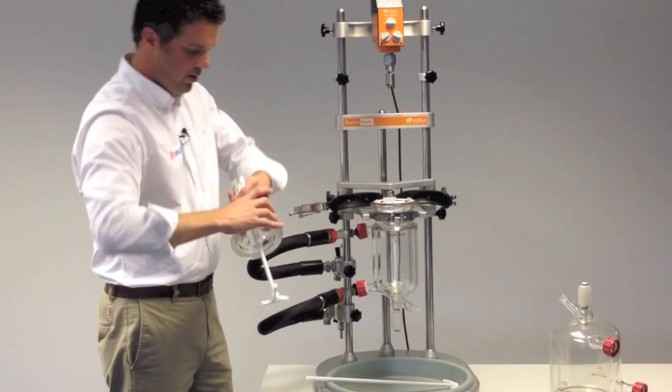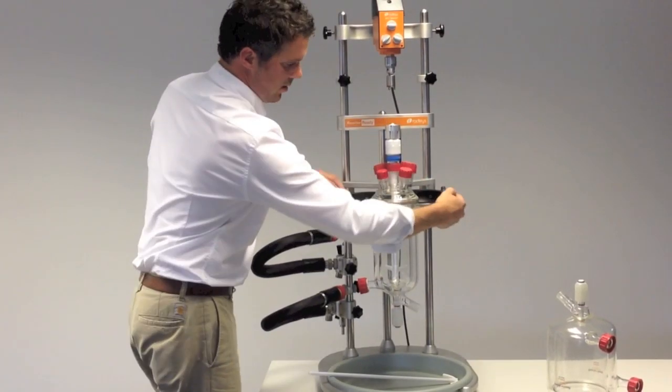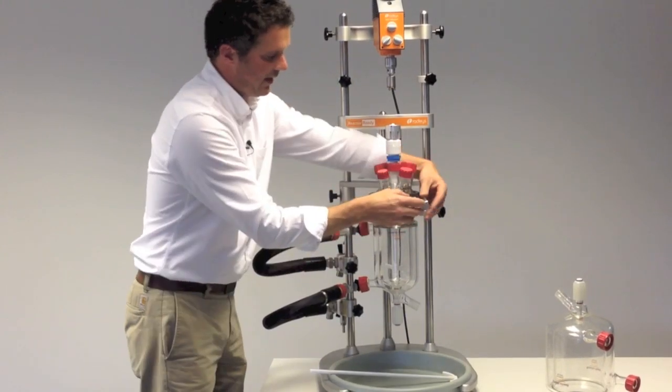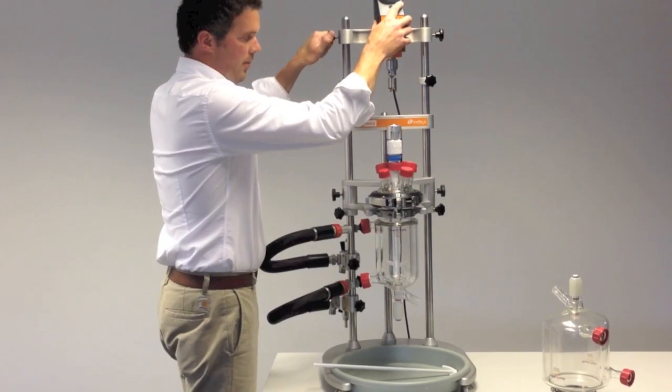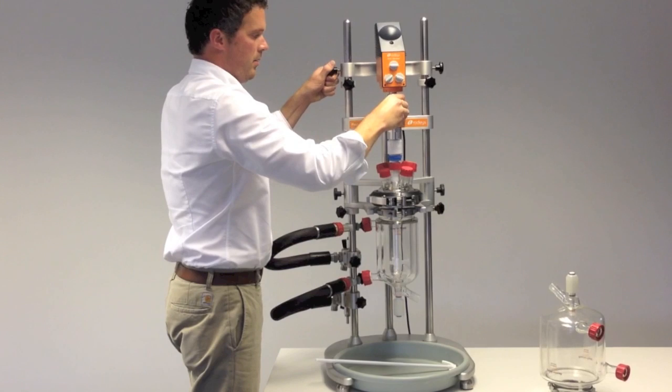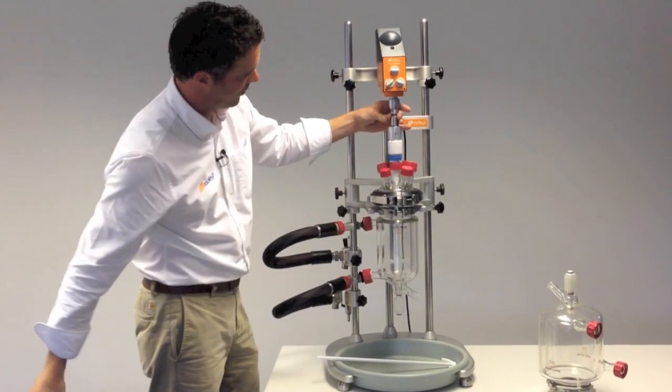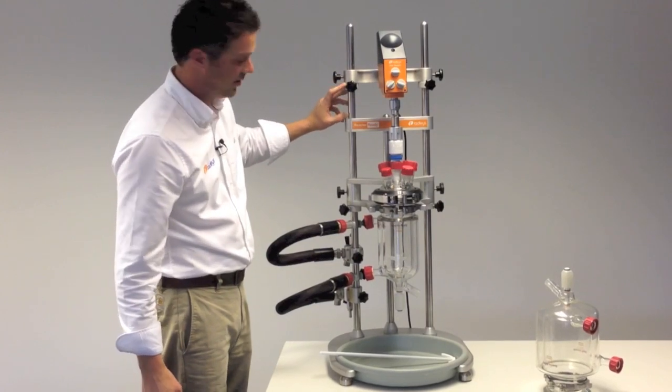The o-ring support collar. And then the quick release clamp just brings that all together and gives a good seal. Then we can drop the stirrer motor back down and you can see that everything's lined back up and it's just dropped back down to the support collars on the framework.